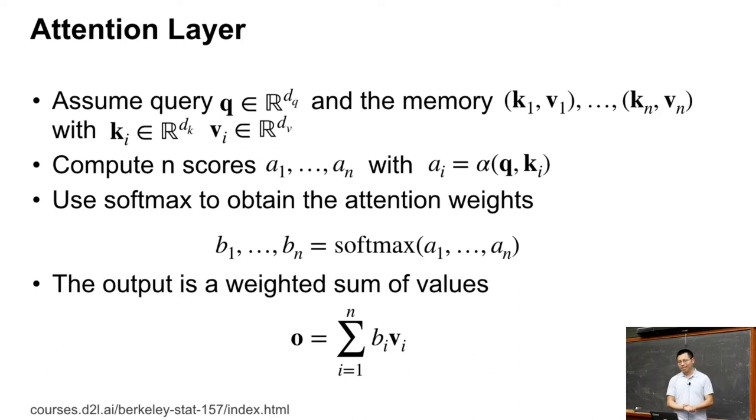Let's look at the math definition. Assume the query is just a d_q length vector, it's q. And the memory has n key-value pairs from k1, v1 to kn, vn. So ki is d_k dimensional vector, and vi is d_v dimensional vector. The first step, given the query, we want to compute a1 to an. ai is the similarity between the i-th key and the query. We call alpha the score function. It's not necessarily similarity.